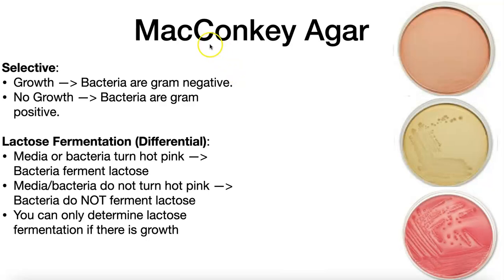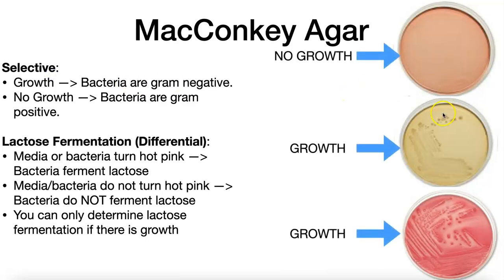The next media is the MacConkey agar. This too has two things that you're going to look for, and again it is both a selective and a differential media. Selective media means that some bacteria will grow on this particular media and others will not. These are three MacConkey agar plates. On the top one, the bacteria streaked onto it does not grow. On the bottom two, you can see growth illustrated by colonies growing at different areas of the plate. Since we're looking for patterns of growth or no growth, this is a selective media.